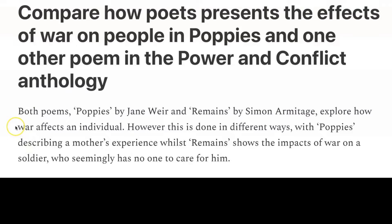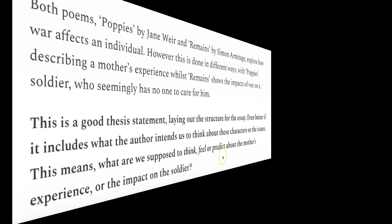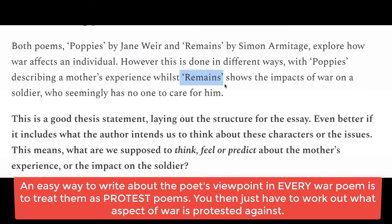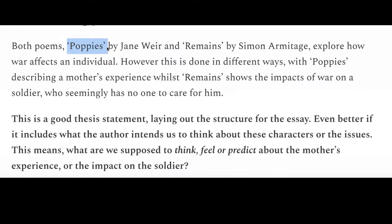She's cleverly pointed out similarities and differences. This would have been even better if she'd told us why the poets were doing that — in other words, what does the poet make us want to think or feel or predict? For example, Remains can be seen as a protest poem about going to war in places like Iraq, or about the way soldiers behave in war, or about the way soldiers are dealt with regarding their PTSD after war. Similarly, we can read Poppies as a protest poem about the propaganda around war that so attracts the son to enlist and go off and fight, and that so horrifies the mother.